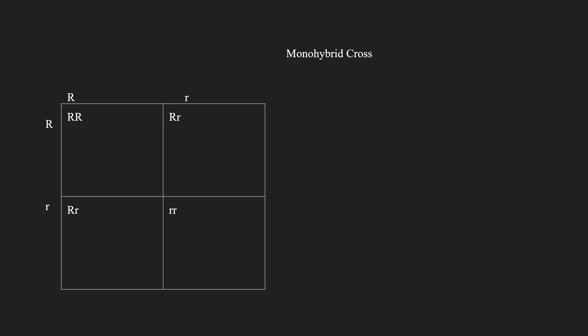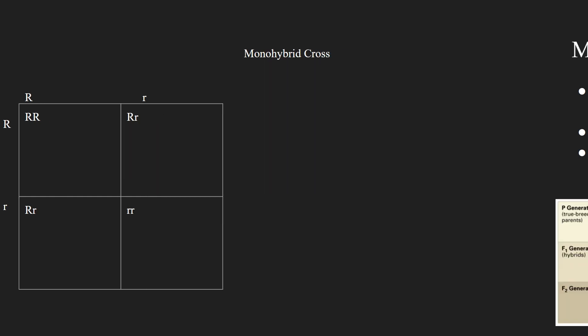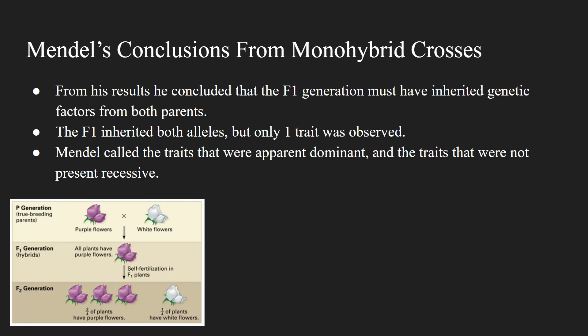Now let's talk about Mendel's conclusions from his monohybrid crosses. From his results, he concluded that the F1 generation must have inherited genetic factors from both parents, and the F1 inherited both alleles, but only one trait was observed. Mendel called the traits that were apparent dominant, and the traits that were not present recessive.